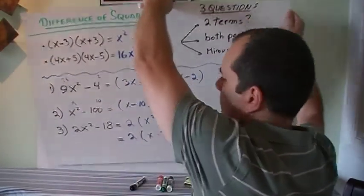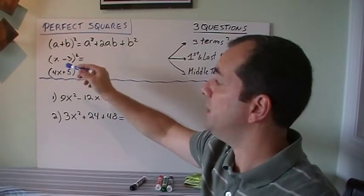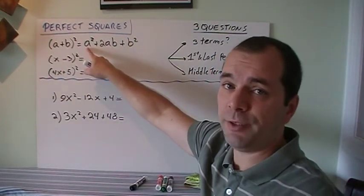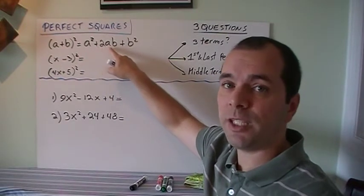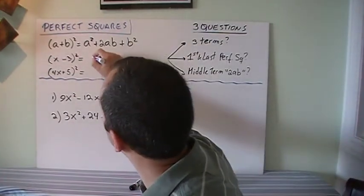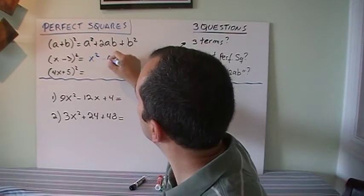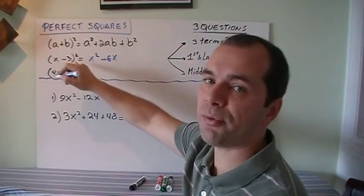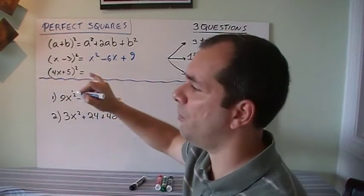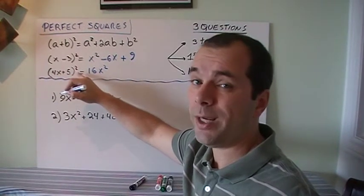Now let's check perfect squares. The formula for expanding a binomial squared: (a+b)² gives a², plus twice a times b, plus b². So if I expand (x-3)², that's x squared, then twice x times minus 3 which is minus 6x, then minus 3 squared which is plus 9. And for (4x+5)²: 4x squared is 16x squared, then 4x times 5 is 20x, twice that is 40x, plus 5 squared is 25.